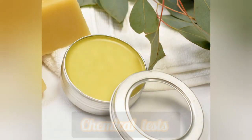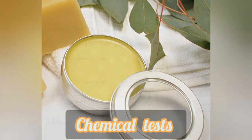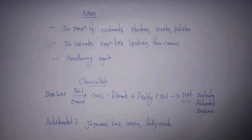Chemical test: when beeswax is boiled with NaOH, cooled and filtered, then acidified with HCl, it gives a precipitate. This precipitate indicates that it is adulterated beeswax.